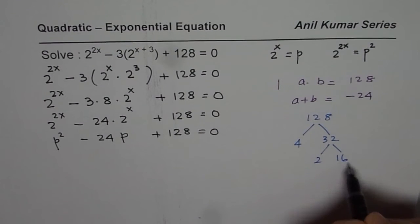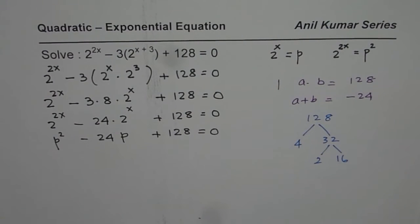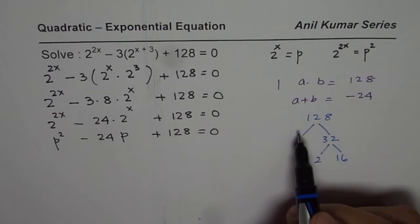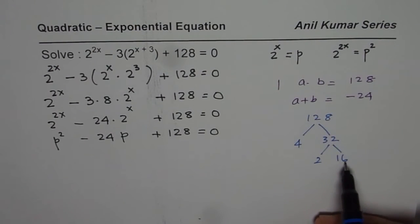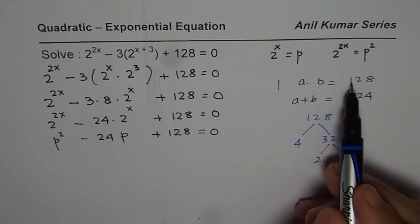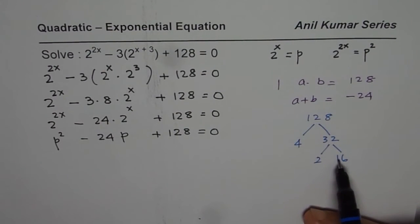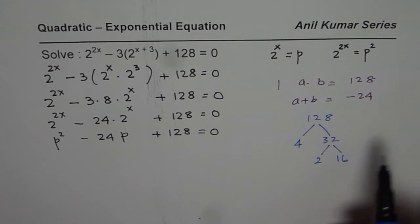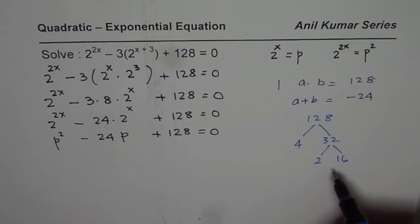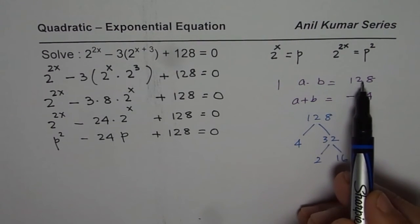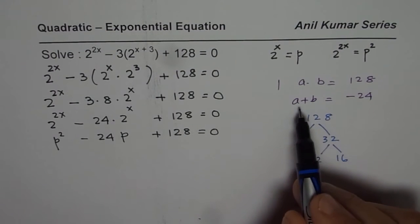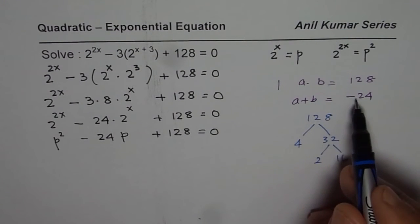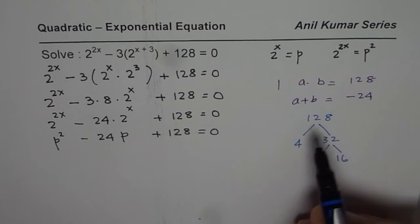Now when you multiply these you definitely get 128 since these are the factors. But when you add you need minus 24. Can you look for a combination which could give you that? Yes we can. When you multiply you need positives. That means both a and b should be negative. When you add them you get a negative number.